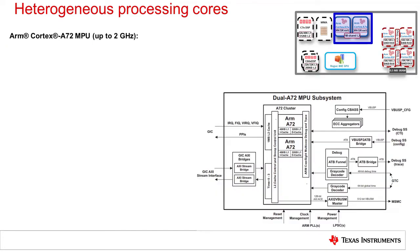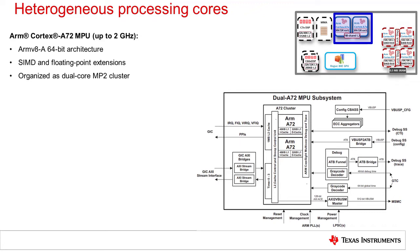The main MPU or microprocessor unit on the Jacinto 7 SoC is the ARM Cortex-A72. This ARM V8A compliant 64-bit core would be the primary choice to run application software on a high-level operating system such as Linux. The A72 is organized as a dual-core symmetrical multiprocessing or SMP cluster with a shared L2 cache. The CPU frequency is dynamically variable up to 2 GHz to help control power during periods of limited operation in the application.